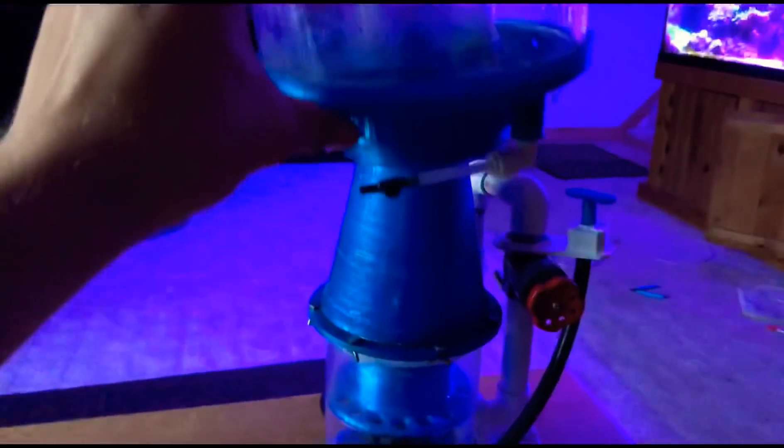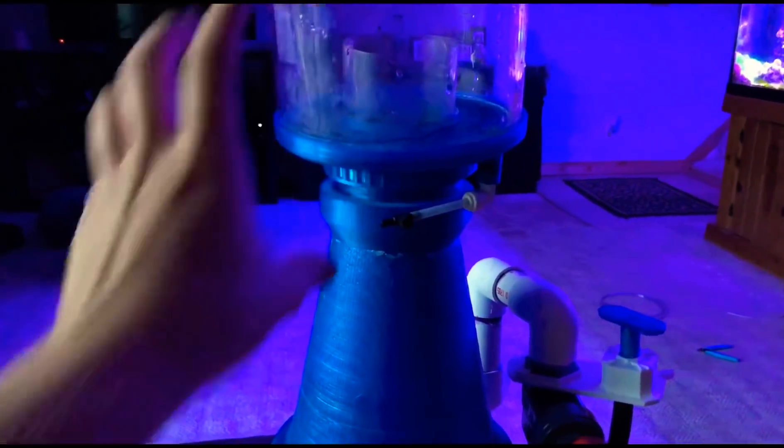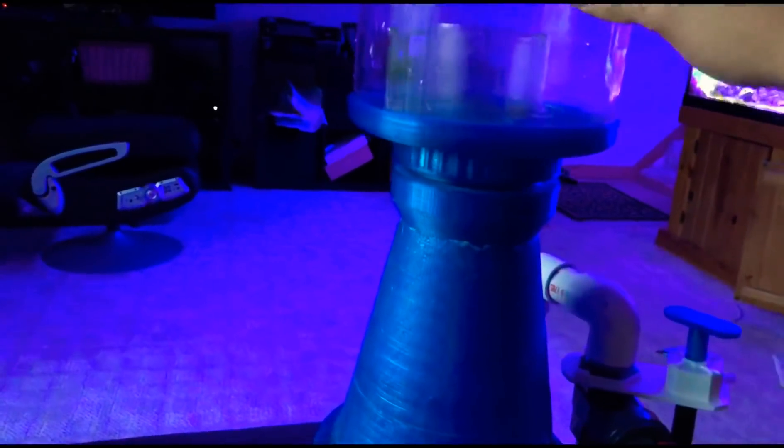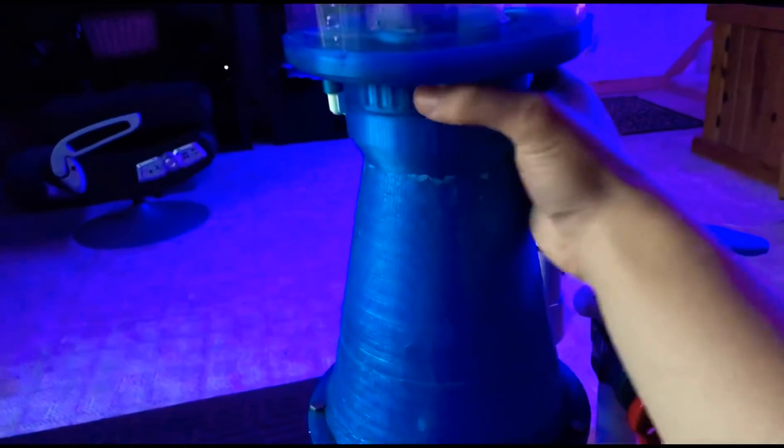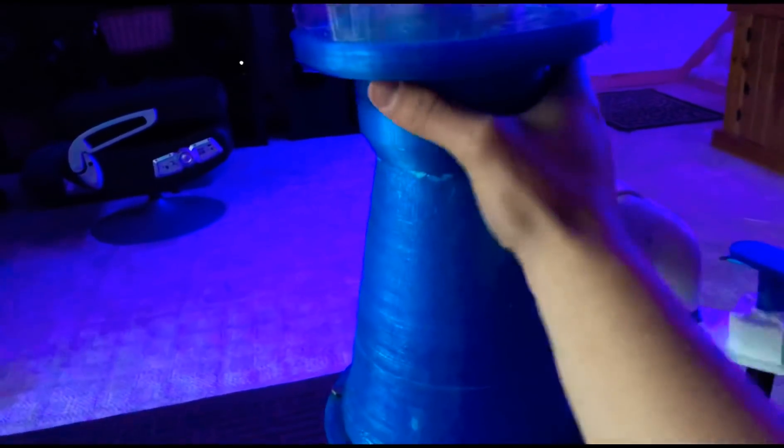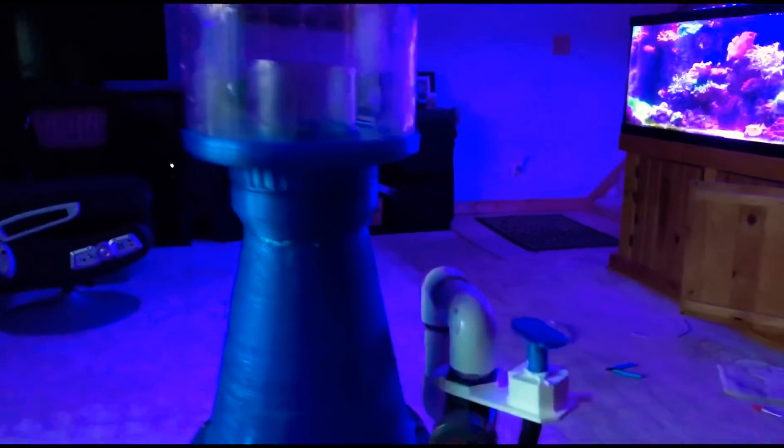One of the features I really liked about new protein skimmers nowadays is that the cup actually just threads off really close to the neck. So when you want to perform maintenance or clean anything, you just take the cup off, not half of the neck or the whole neck and then the cup, just the cup. That was one thing I really wanted to put on this build.